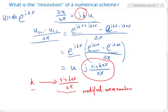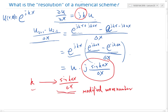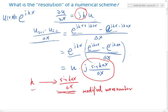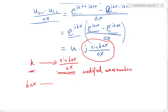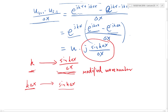k is the wave number — the frequency in space. And this is the modified wave number: it's how the numerical scheme is modifying the wave number. This also relates to dispersion and dissipation. For the central difference scheme, it's customary to plot k delta x against sine of k delta x, because k delta x is the wave number non-dimensionalized by the grid spacing, and sine(k delta x) is the modified wave number non-dimensionalized by the same grid spacing.